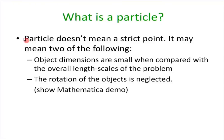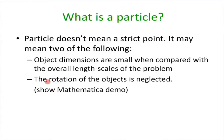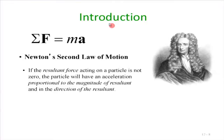Newton's second law strictly speaking works on a particle. A particle is an abstract concept, but it does not mean strictly a point — it only means the overall dimensions are small compared to the overall length scale of the problem. When rotations of objects are neglected, a whole three-dimensional body can be treated as a particle. Newton's law says that if F is the bunch of forces acting on the particle, the sum of all forces is mass times acceleration: F = ma.